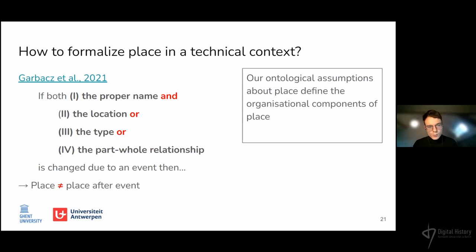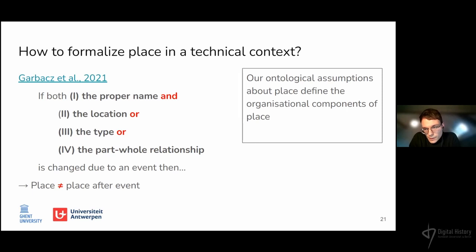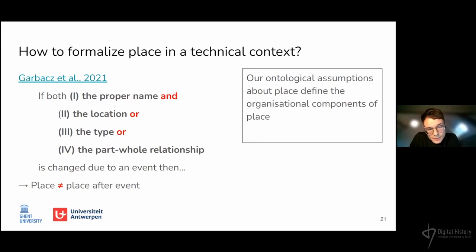So from this viewpoint, place is organized as a set of relationships, and this set must have components we can model in our database. Just as the concept of place, these components are subjective. To solve this, we should look at the common ontological assumptions researchers have about these components of place. Garbatsch et al. discuss in a 2021 article how identity criteria of settlements — for example, villages — can be defined by the ontological assumptions of historical researchers. The authors conclude there are four crucial perceived identity criteria for place, namely the proper name of place and the part-whole relationship between different places. A place changes its identity if an event causes the place to change its proper name and one of the three other mentioned criteria. In the ongoing development of the gazetteer, I am exploring whether this reasoning is applicable to the urban gazetteer.